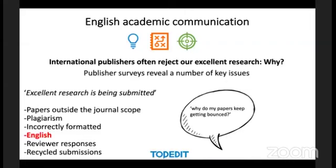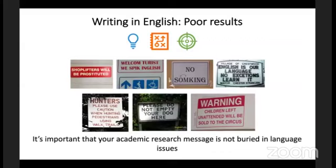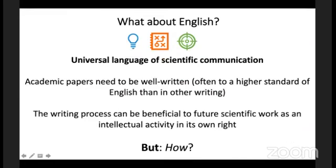If you've enjoyed this presentation, do get in touch with Naran or with me — we'd love to provide further training for your institution. Writing in English provides poor results if the English is ambiguous. Your academic research message, your content, your communication should not be buried in language issues. English is the universal language of scientific communication.